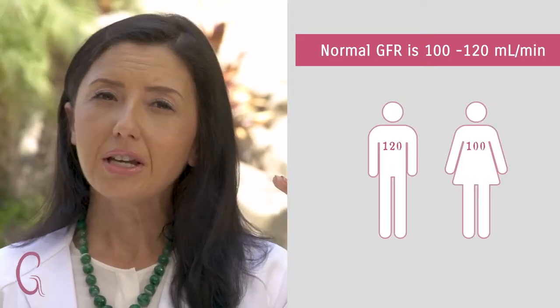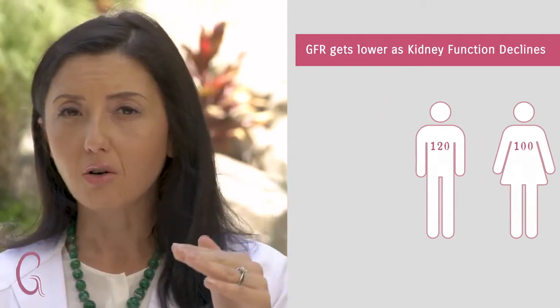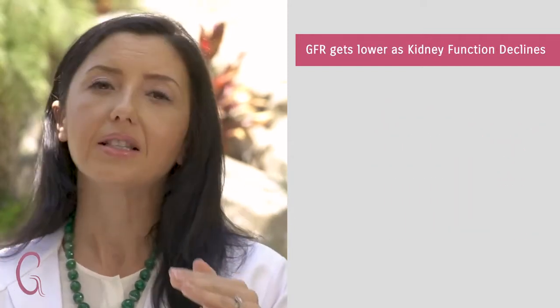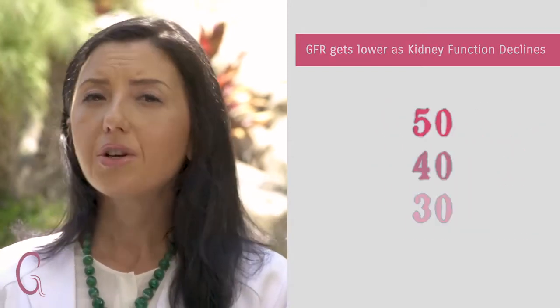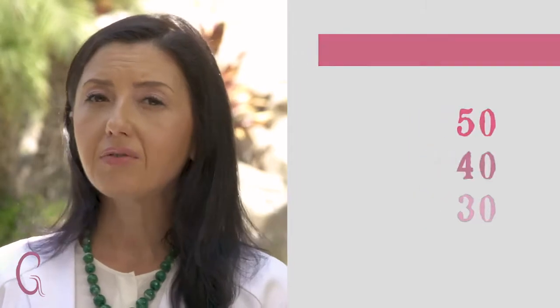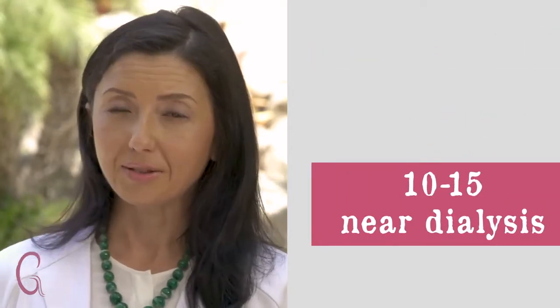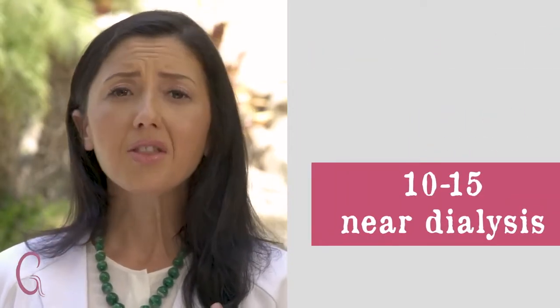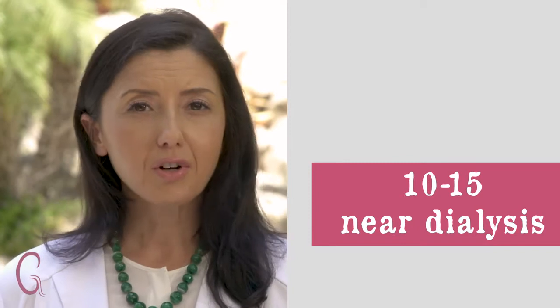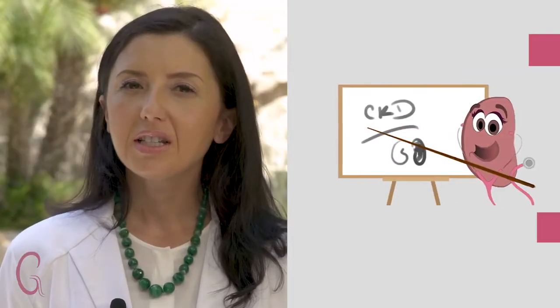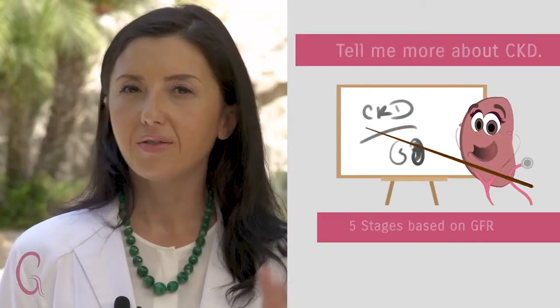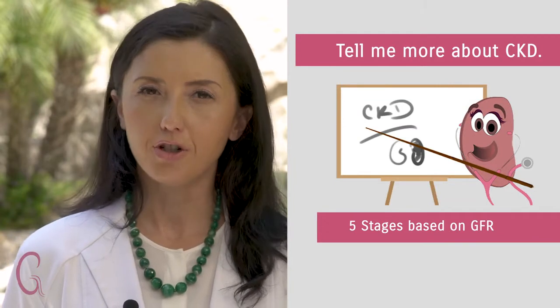As your kidney function declines, your GFR goes down — say it's 50, 40, 30. When you're down to 10 or 15, you're near dialysis. This is the term your doctors are referring to when they say your kidneys are functioning at 50% or the kidneys are functioning at 35%.